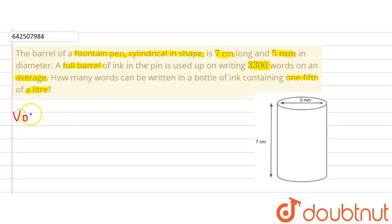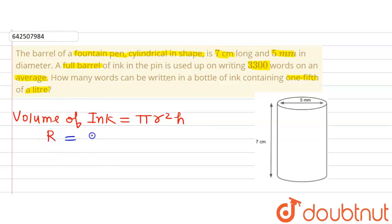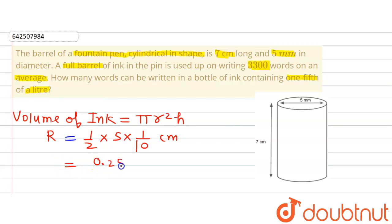The volume of ink in the barrel will be equal to pi r squared h, since it is of cylindrical shape. We are given the diameter as 5 mm, so the radius equals diameter divided by 2. To convert millimetres into centimetres we divide by 10, giving us a radius of 0.25 cm.